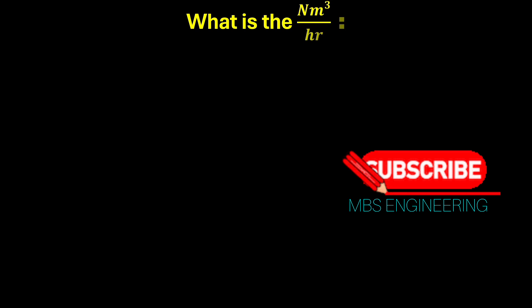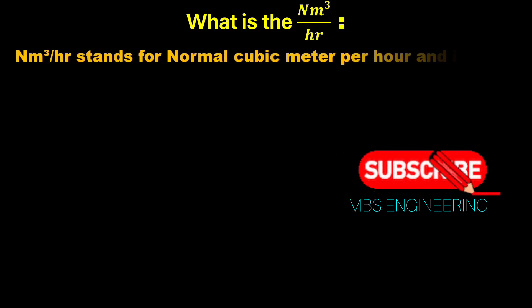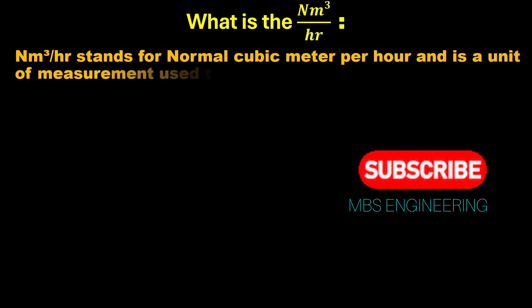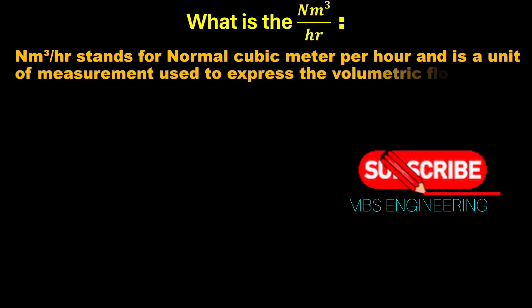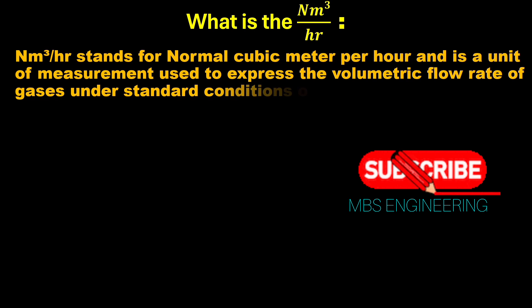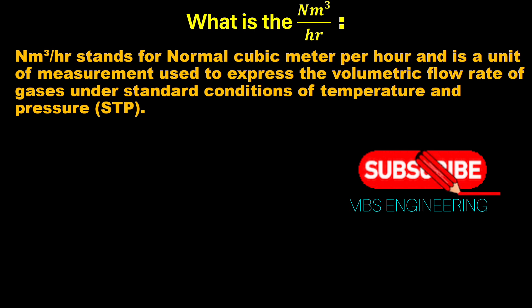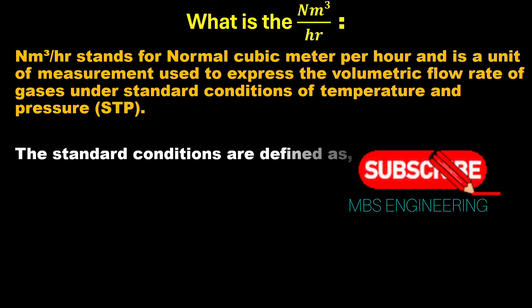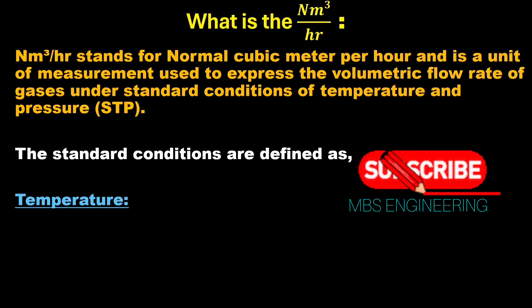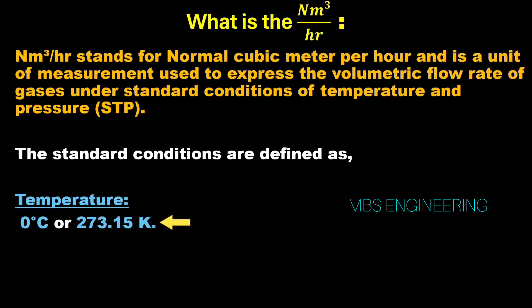Nm³/hr stands for normal cubic meters per hour, a unit of measurement used to express the volumetric flow rate of gases under standard conditions of temperature and pressure (STP). The standard temperature is defined as 0 degrees Celsius or 273.15 Kelvin.